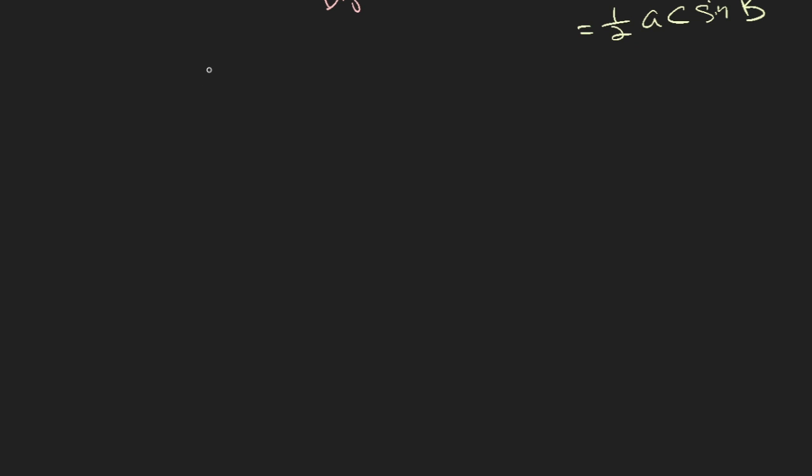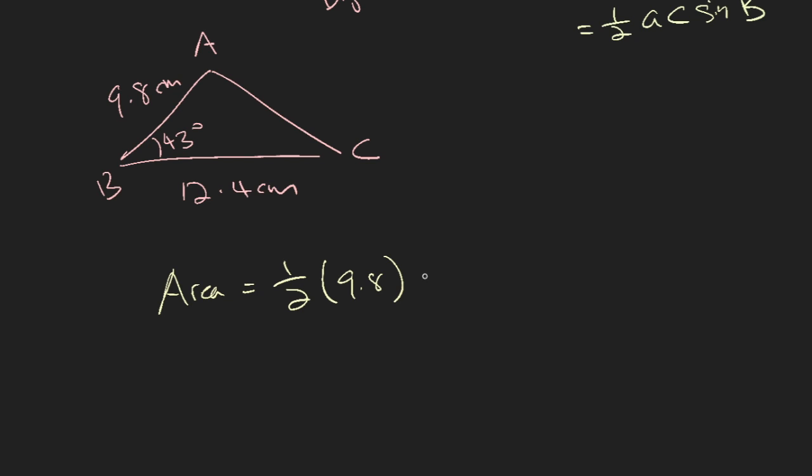Now a really simple example. You have a triangle, and over here it's 43 degrees. This is 12.4 cm, 9.8 cm here, A, B, and C. Find the area of this triangle. So area is equal to half times 9.8 times 12.4 times sine of 43 degrees, which will give you 41.4 cm².